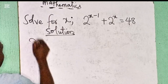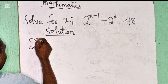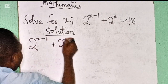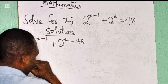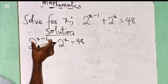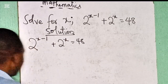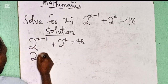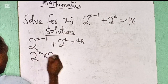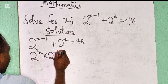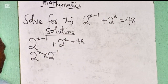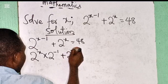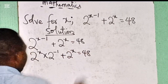If I have 2 raised to the power of x minus 1, plus 2 raised to the power of x, equals 48. Go back to the laws of indices. This can be written as 2 raised to the power of x, times 2 raised to the power of minus 1, plus 2 raised to the power of x, equals 48.